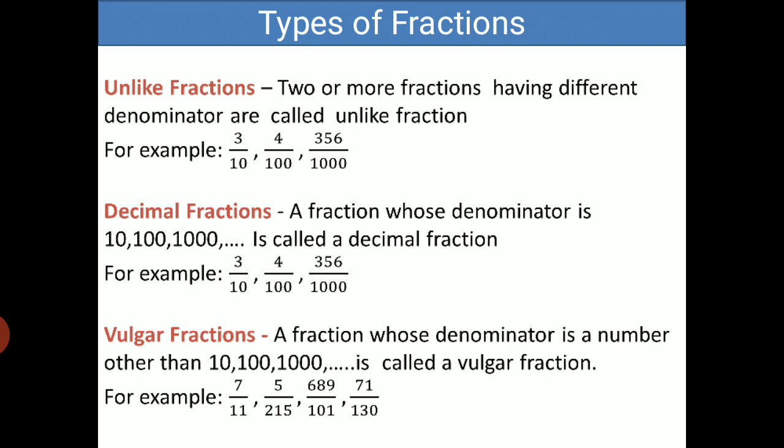Next is decimal fraction. A fraction whose denominator is 10, 100, or 1000 is called a decimal fraction. For example: 3 by 10, 4 by 100, 3,506 upon 1000.